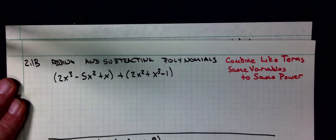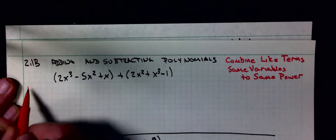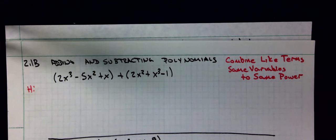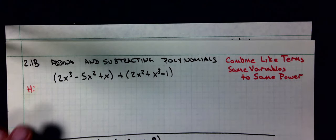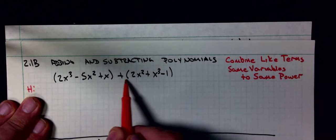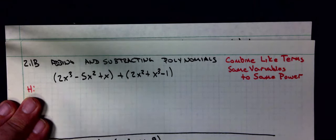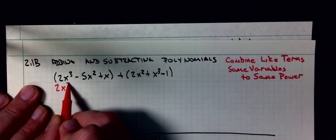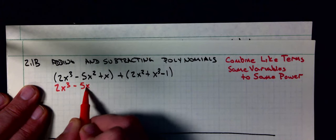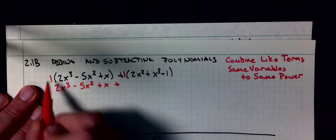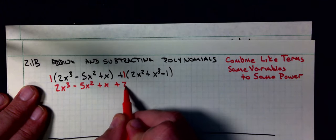The first way I do it is called the horizontal. What I'm going to do is look for like terms. First thing I want to do is get rid of all the parentheses. If there is a positive sign in front of a parentheses or nothing in front of a set of parentheses, you can just get rid of the parentheses. Because a positive one in front of both of these, they just disappear and I copy everything.